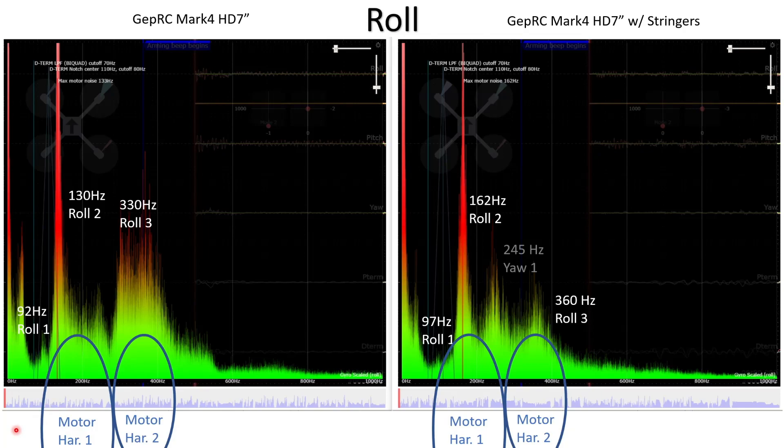Okay so let's look at the black box log now. This is a spectrograph for the roll axis. It's a side-by-side comparison of two really similar flights. The first on the left is the GEPRC Mark IV HD7 without any carbon fiber stringers fitted and on the right is exactly the same quad with the stringers fitted. We can see immediately that there's quite a big difference between the spectrographs of these two flights. The first roll mode here at 92 Hz has increased in frequency slightly up to about 97 Hz and it could definitely be argued that on the second flight the vibrations are less, the peak is smaller.